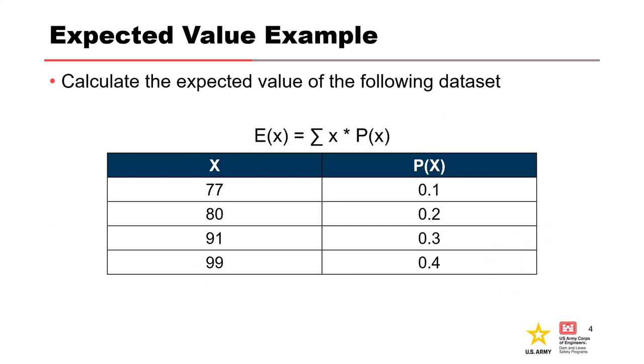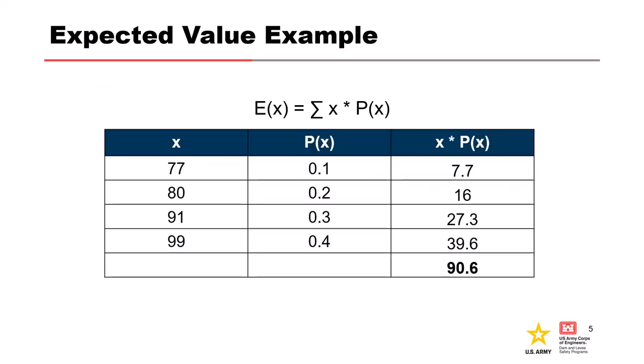Here's an example for you to practice calculating the expected value. I want you to calculate the expected value and tell me what it is here. That's great. All it is, is we're looking at the individual value. In this case, our values are 77, 80, 91, and 99. We're multiplying them by their individual probabilities. It's essentially a weighted average calculation. And that's how we arrive at 90.6.